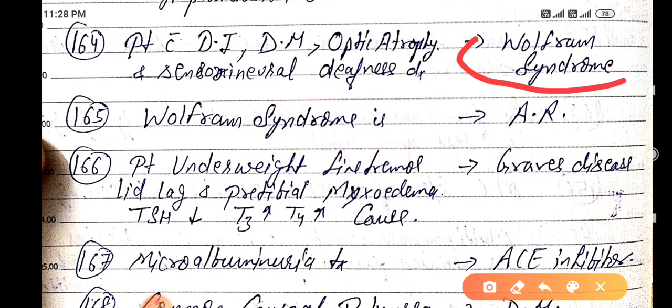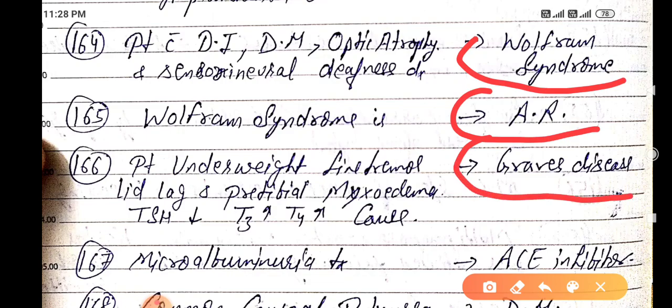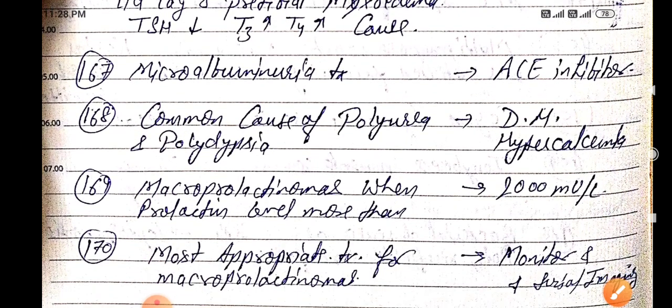Patient with diabetes insipidus, diabetes mellitus, optic atrophy, and sensorineural deafness — diagnosis is Wolfram syndrome. Wolfram syndrome is an autosomal recessive disorder. Patient underweight, fine tremor, lid lag, and pretibial myxedema.